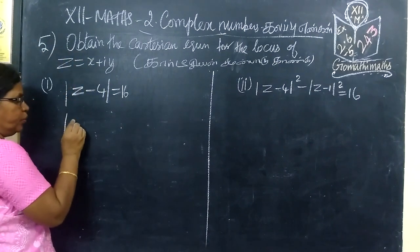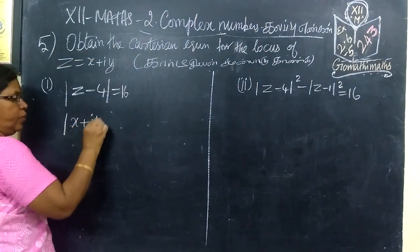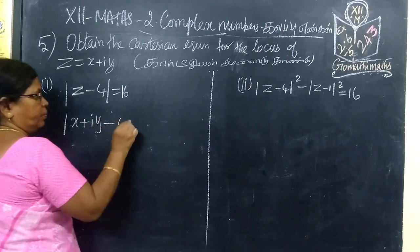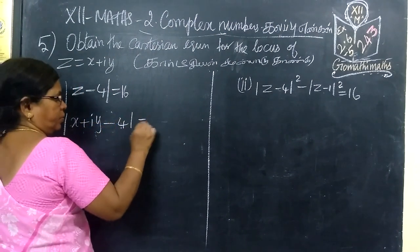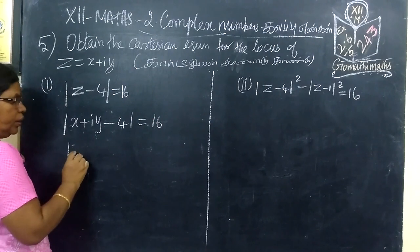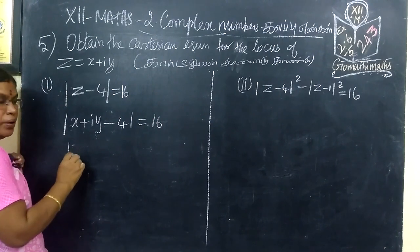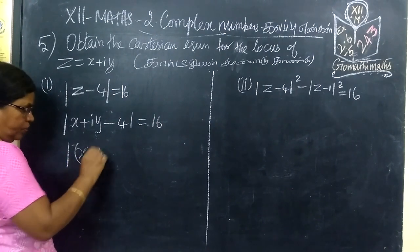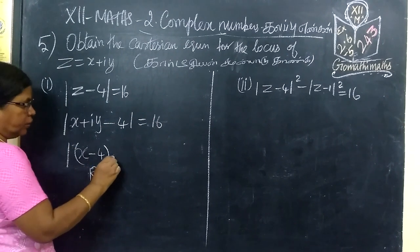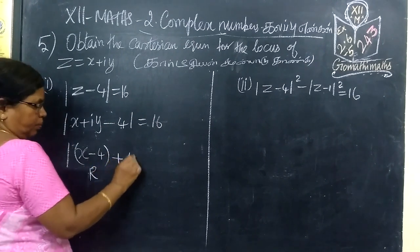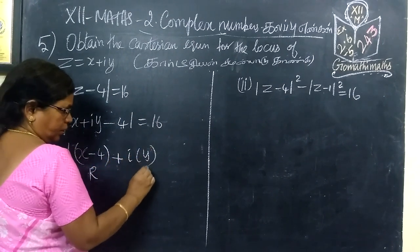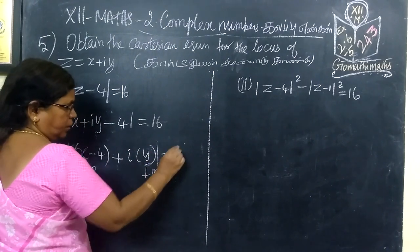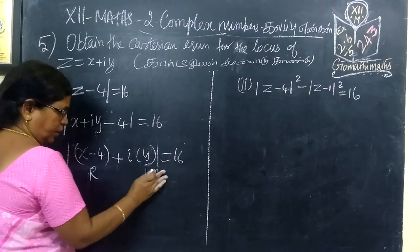Let Z equal to x plus iy. Then, writing real part and imaginary part: x minus 4 is the real part, and y is the imaginary part. Setting the modulus equal to 16.